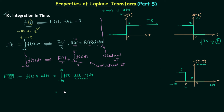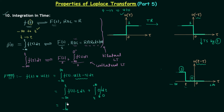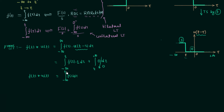We break the integration into two parts. The first integral runs from minus infinity to t, where u(t minus tau) equals 1, giving us the integral of f(tau) d(tau). The second integral runs from t to plus infinity, where u(t minus tau) equals 0, so f(tau) times 0 gives 0. Therefore, f(t) convolved with u(t) equals the integral from minus infinity to t of f(tau) d(tau).